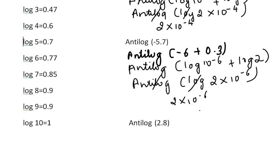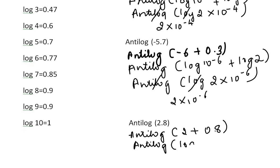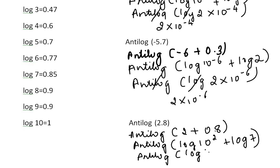The third question: anti-log of 2.8. This can be written as anti-log of 2 plus 0.8. So it becomes anti-log of log 10 to the power of 2 plus log 7, since log 7 = 0.85 and 0.8 is closest to that value. Following the same procedure, this gives log of 7 into 10 to the power of 2. After cancellation, the answer is 7 into 10 to the power of 2.